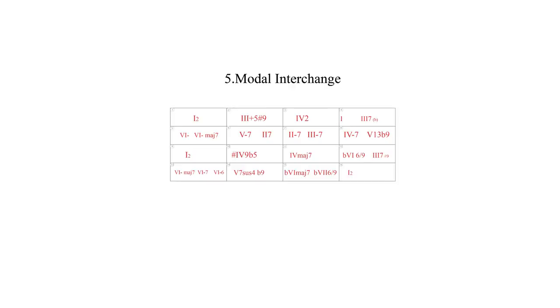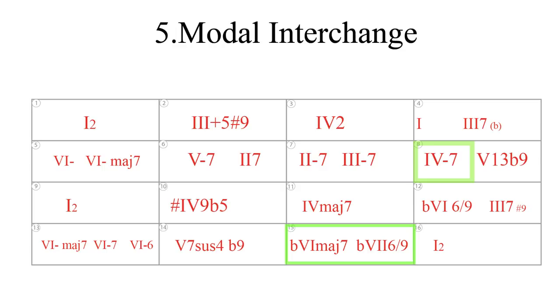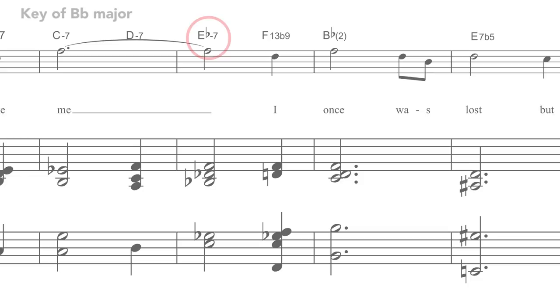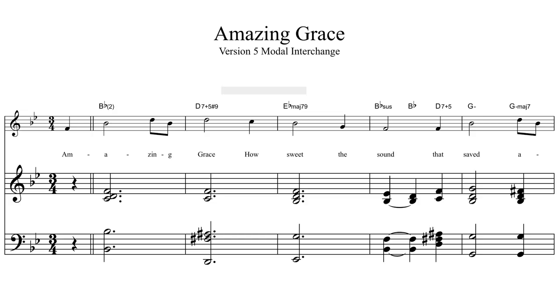So here's the chord chart with the modal interchange highlighted. The first instance is in bar 8 with the E flat minor 7. Let's listen from the top to get an idea how this modal interchange sounds and feels. How sweet the sound that saved a wretch like me.